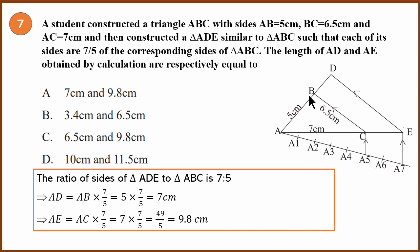And we need to do the same thing: 7 cm multiplied by 7 by 5, we get 9.8. Answer is A.